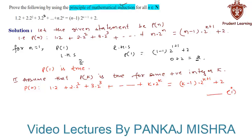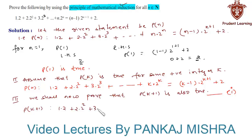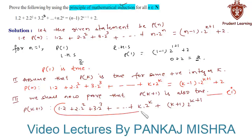In our final generalization step, we shall now prove that P(k+1) is also true. P(k+1) states: 1·2 + 2·2² + 3·2³ + ... + k·2ᵏ + (k+1)·2^(k+1). From equation 1, we substitute the value of the first k terms as (k−1)·2^(k+1) + 2.